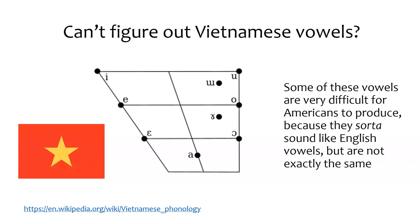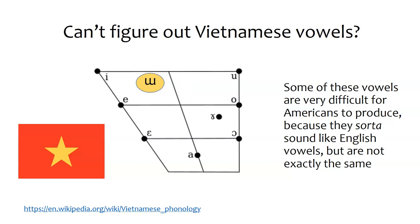For a while, I worked on understanding the difficulties in producing Vietnamese vowels for people who spoke English as their native language — adults traveling to Vietnam to do diplomatic work. There's a vowel that's not used in English, and when they tried to produce it, sometimes it came out like a different vowel, because there was no English vowel that mapped to that sound. When they listened to native instructors produce the sound, they had a lot of difficulties, so we had to track the acoustic differences between what they produced and what the target sound really was.